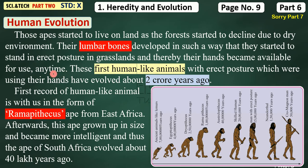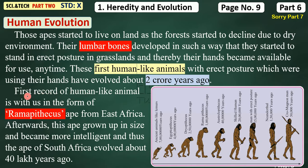Their lumbar bones developed such that they started to stand in erect posture in grasslands, and therefore their hands became available for use. These first human-like animals with erect posture, which were using their hands, evolved about 2 crore years ago. This first animal as a human had less hair in its body and was standing straight.